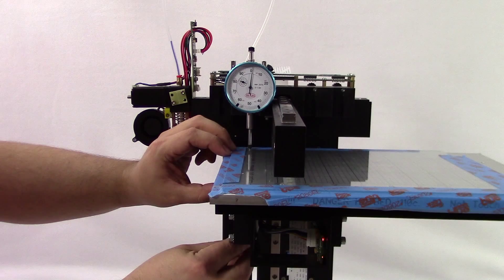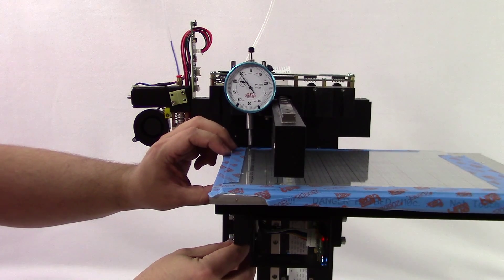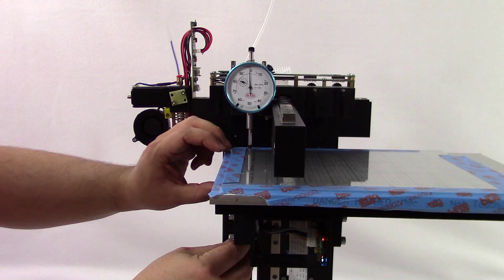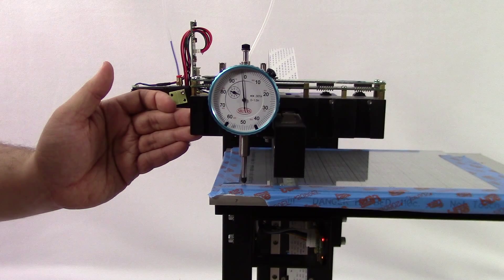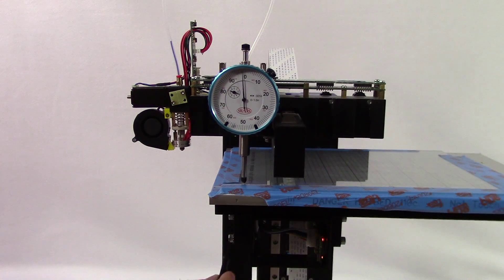Place the dial gauge pin to the furthest corner on the removable build plate. Make sure the dial gauge pin is not touching the tape. The idea is to have the set screws in the four corner pylons engaging the heated bed with the dial gauge set to zero.